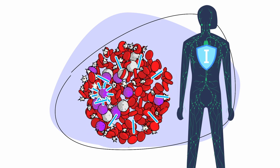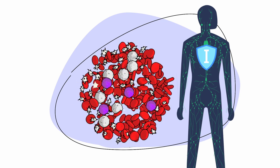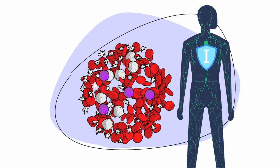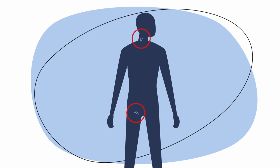In MCL, some of these B cells in a part of your lymph node called the mantle zone turn cancerous. This causes them to grow out of control and makes the lymph nodes bigger.